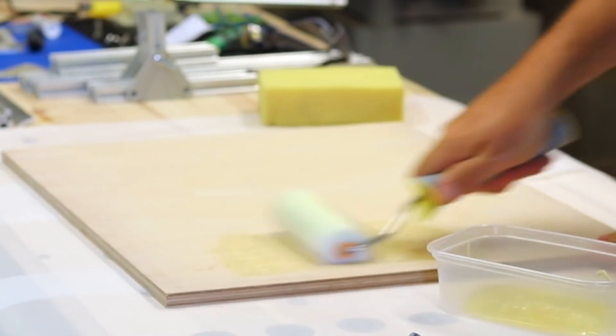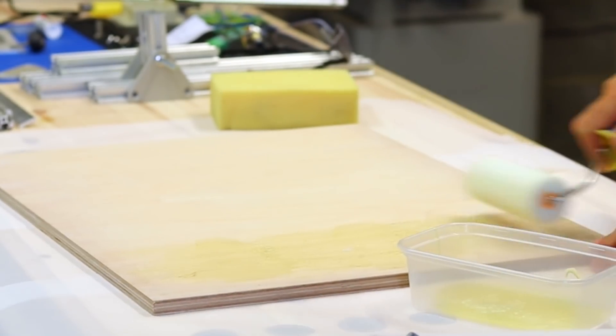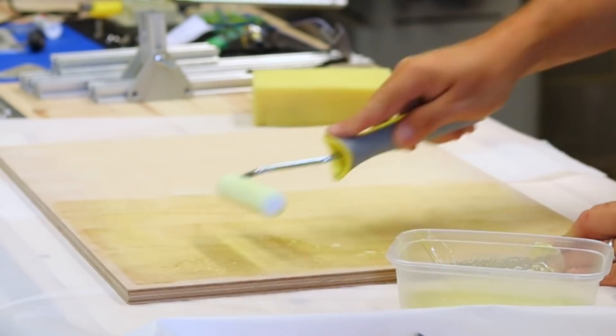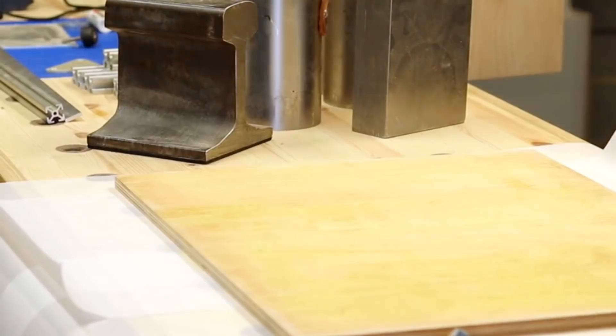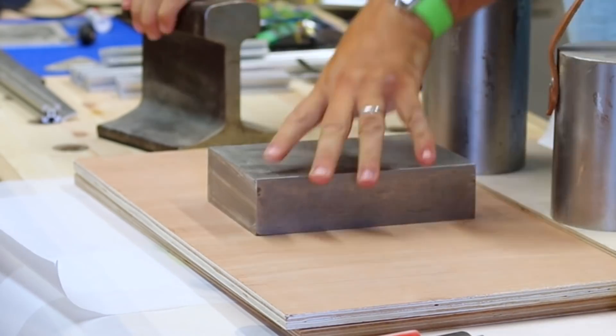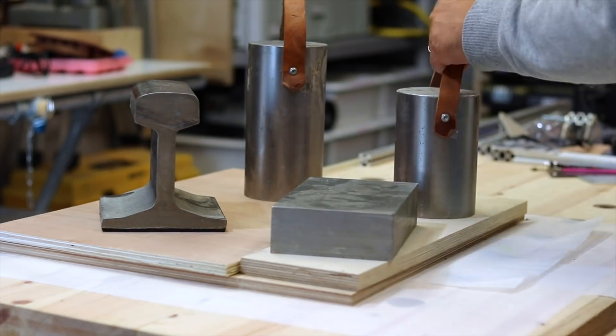So firstly, I'm going to laminate the Formica to the birch plywood. I'm using some contact adhesive and spreading it out evenly on both sides. Now that's the biggest piece of Formica I had, so I was quite fortunate with that. I just weight it down with all the steel weights that I have.